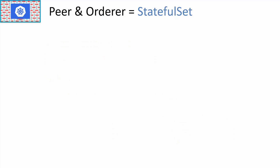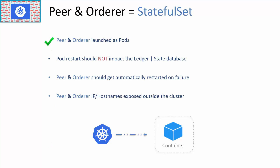The peer and orderer may be defined as stateful sets. With stateful sets, containers are launched in pods — requirement one is met. The container can use persistent volumes for data storage outside the container, so when the pod restarts it reconnects to the persistent volume and continues using the data — requirement two is met. Stateful sets also restart pods on failure — requirement three is met. Requirement four can be met with Kubernetes services. With stateful sets we can meet all requirements.